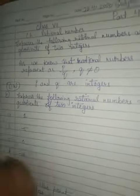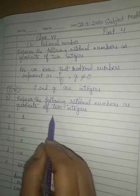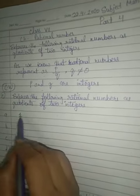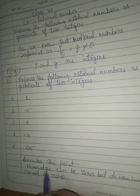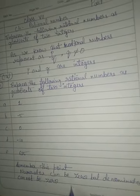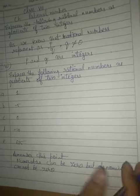Now we will take an example. Suppose we want to express the following rational numbers as a quotient of two integers. So we have these questions. Remember this point first: the numerator can be 0 but the denominator cannot be 0.